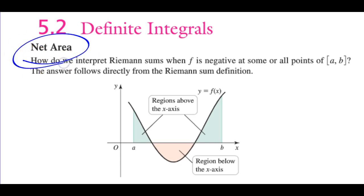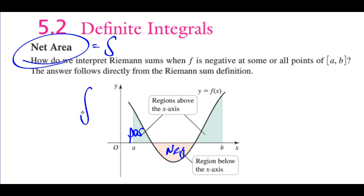Let's talk about the difference between net area and absolute area, or integration. Net area is the integral from left to right, from A to B. It talks about positive area and negative area. The rule of thumb is if you see the integral sign, you're always talking net area, unless they ask for absolute area.